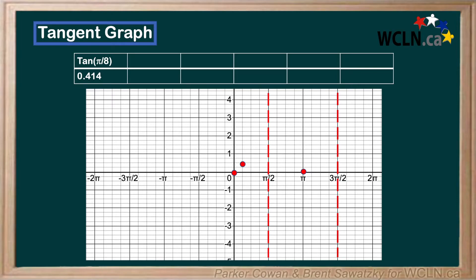Next, we have tan of 2 pi over 8, which is the same as tan of pi over 4. We may recognize this angle, which is equivalent to 45 degrees, where the side lengths are equal. Thus, tan of pi over 4 is equal to just 1.